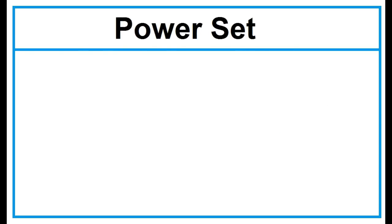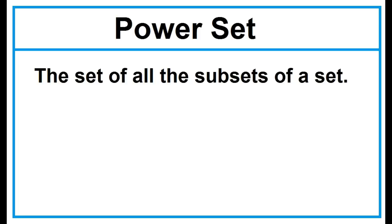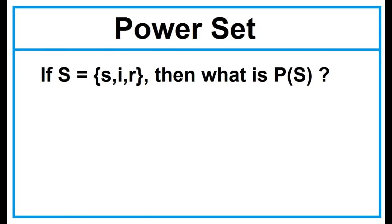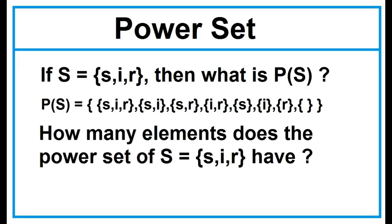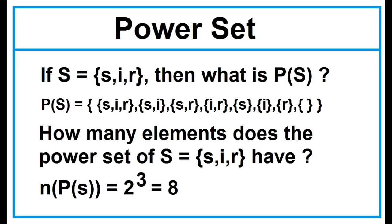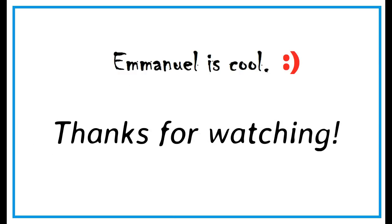Power Set — the set of all the subsets of a set. What is the power set of Set S? P(S) contains all the subsets of Set S. The power set follows the formula 2 to the power of N, where N is the number of elements. So the number of elements of P(S) is 2 to the power of 3, which equals 8.